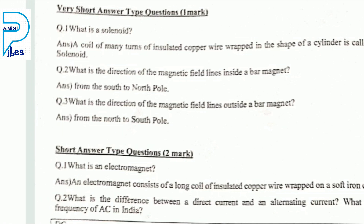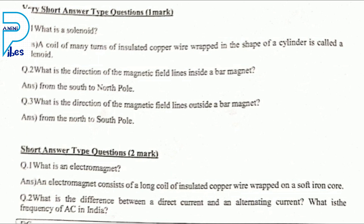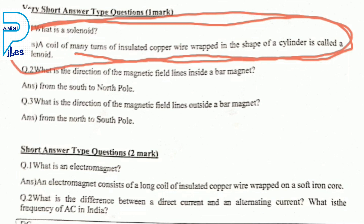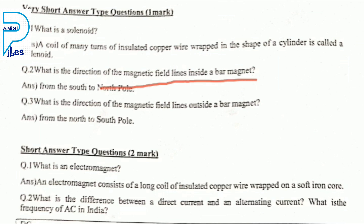This is the revision of what we covered. The main short questions, which are very important for the CBSE board exam: a coil of many turns of insulated copper wire wrapped in the shape of a cylinder is called a solenoid. The direction of magnetic field lines inside a bar magnet is from south to north pole. Outside a bar magnet, from north to south pole.